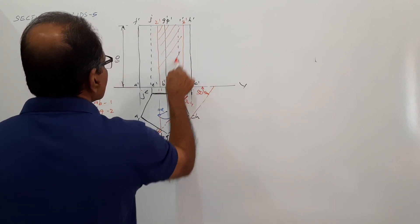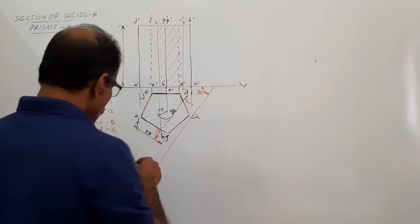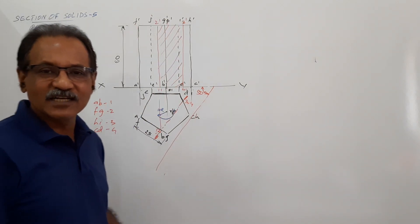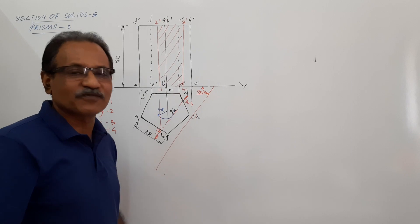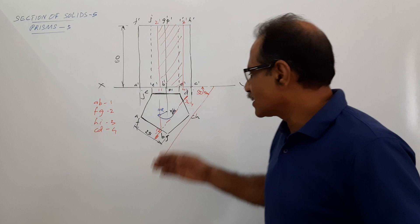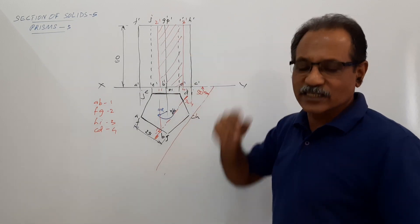1 dash, 2 dash, 3 dash, 4 dash is the sectional elevation, elevation of the cut surface. So what you have completed, you have completed the sectional plan, you have completed the sectional elevation.